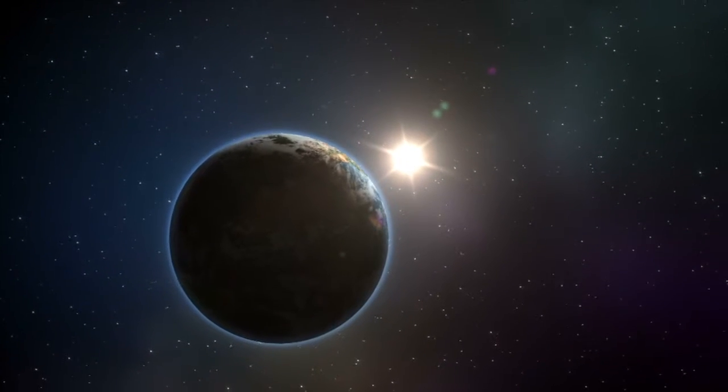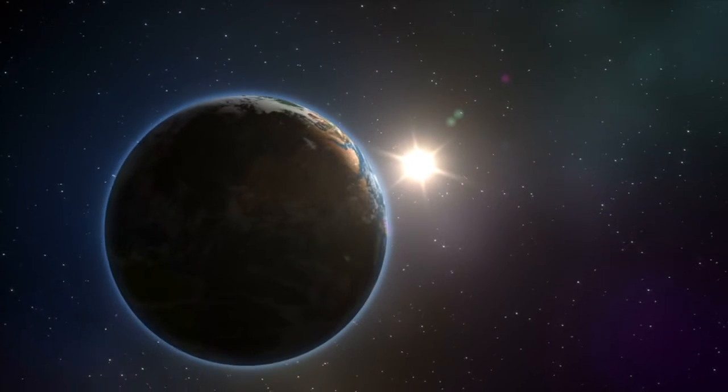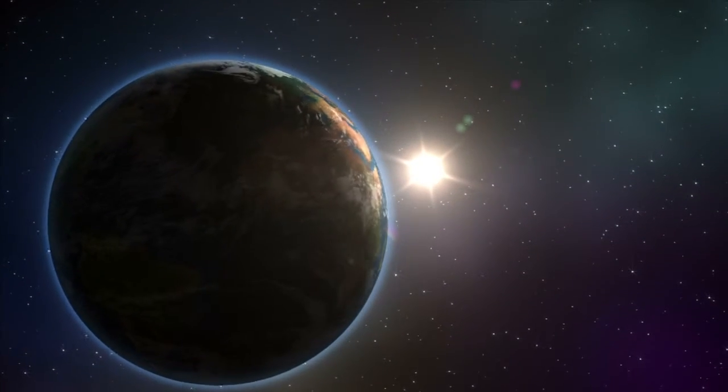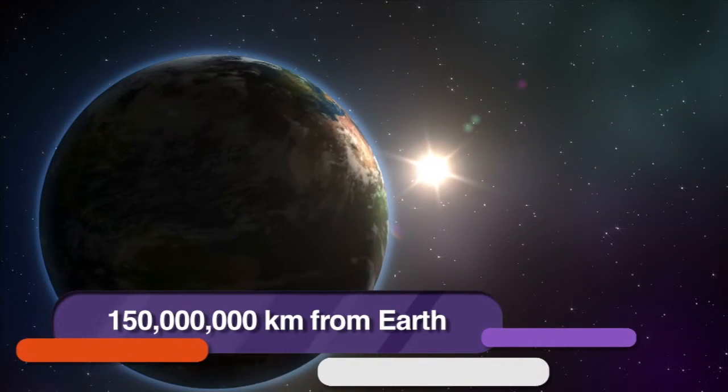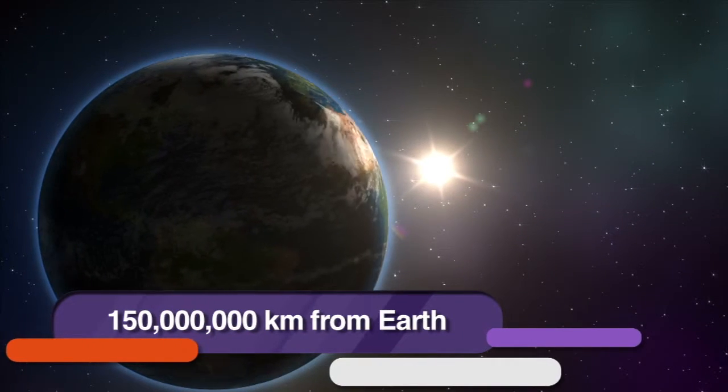The reason the Sun looks so much bigger and brighter than other stars is that it's the closest star to us. The Sun is 150 million kilometers away from Earth. How far away is that? Well, if we were to travel in a spaceship that could take us to the Moon in two days, it would take us almost a year to get even close to the Sun.